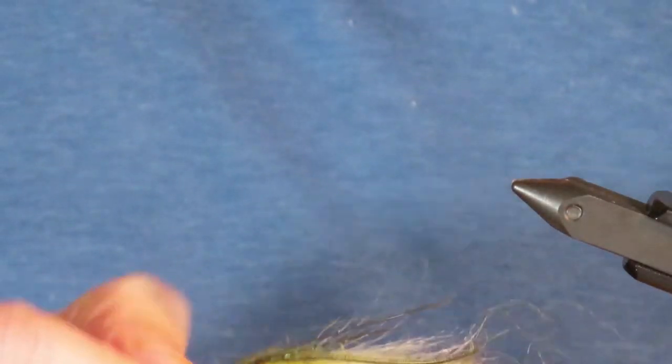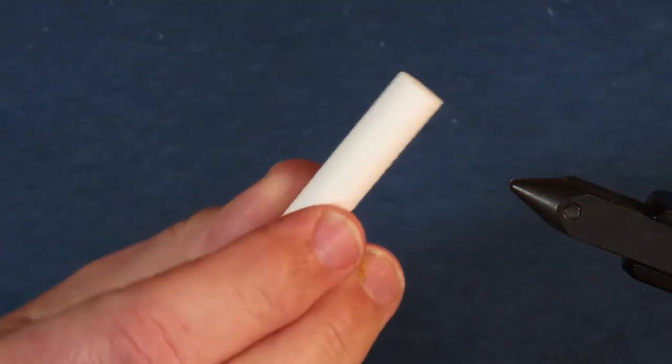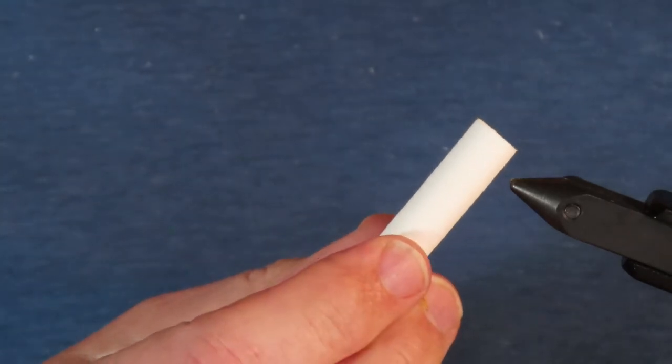At this point, I'm going to remove the fly from the tube adapter. For the popper head, you can use a Rainy's Peewee Pop, but I find that they're usually out of stock in the white color. So I make my own out of this 3/8 inch foam cylinder from Wapsi or River Road.